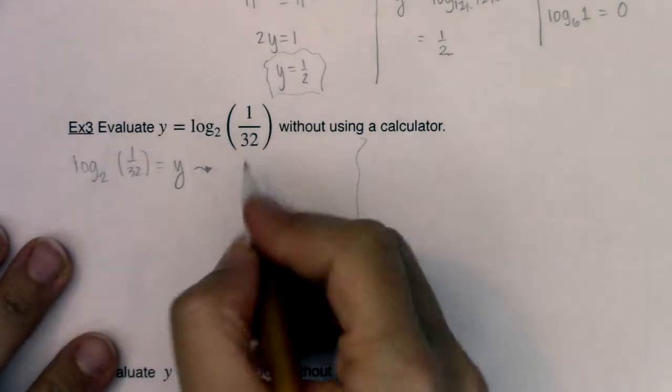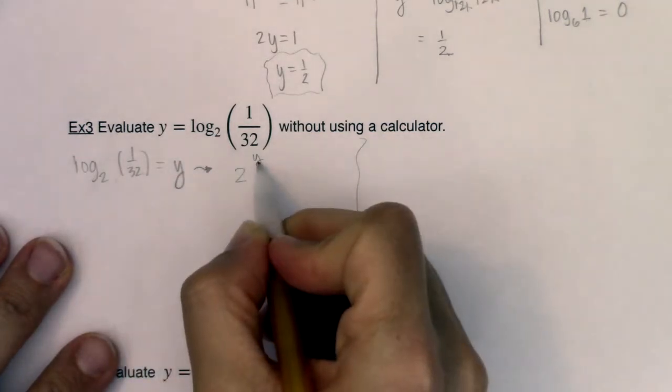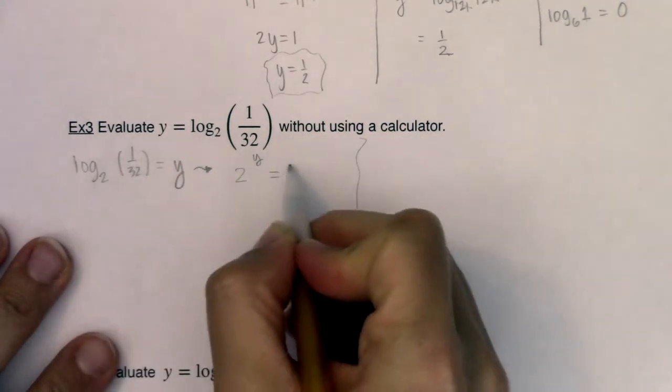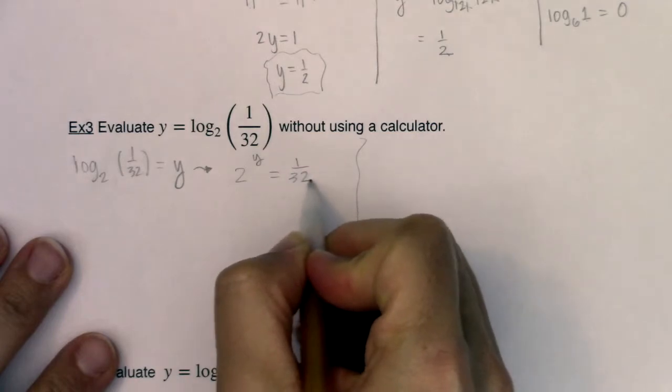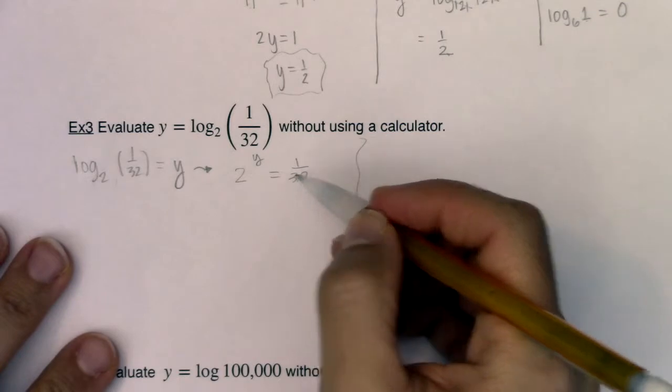So the base of my logarithm will be the base of my power, the logarithm itself will be my exponent, and the argument becomes what this power is equal to. Okay, so I have 2 to the y equaling 1 over 32, great.